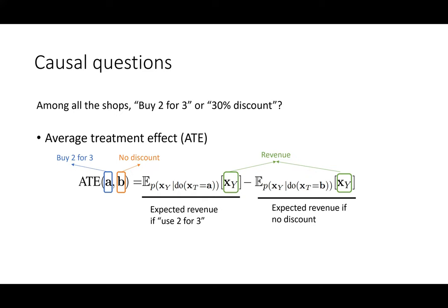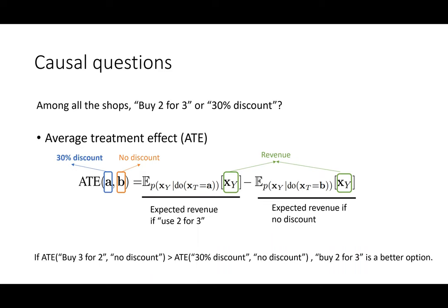From all different scenarios we need to optimize decisions, and all of this actually boils down to causal questions. For example, for a shop: should I take the 'buy two for three' or 30% discount? To make this decision, if we know which is better for driving revenue it would be easy. What we need to know is the average treatment effect. We want to see the revenue given the 'buy two for three' program compared to no discount, and similarly for the 30% off program compared to no discount.